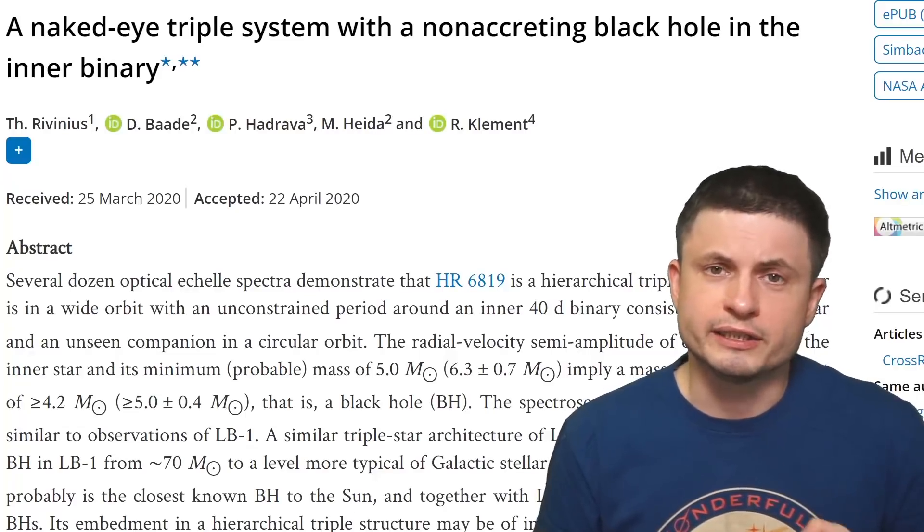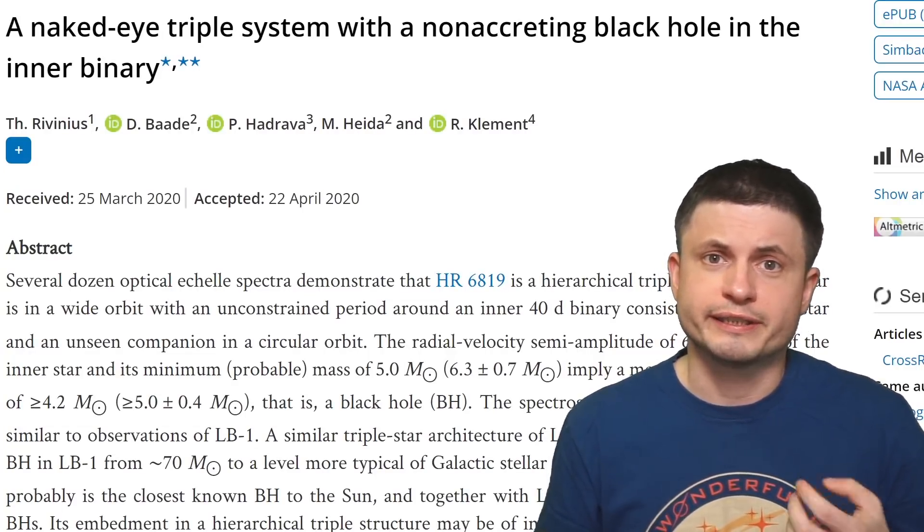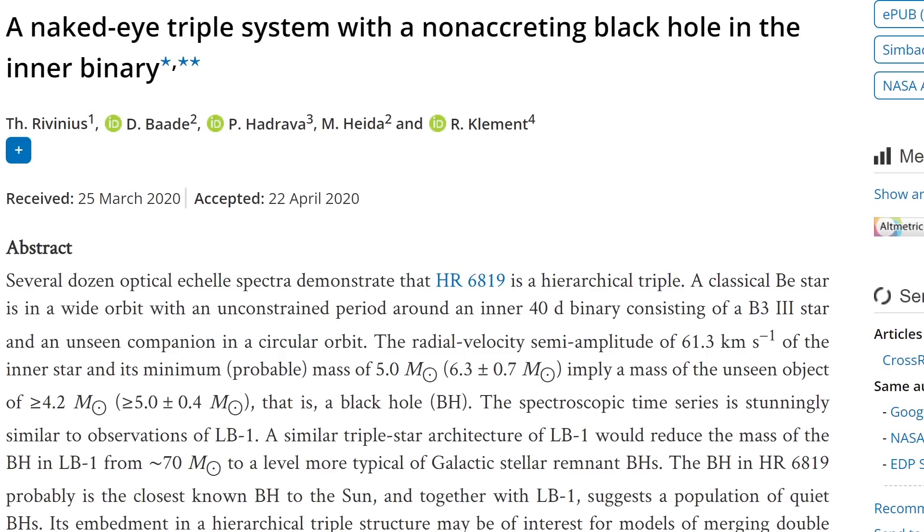Hello, wonderful person, this is Anton, and in this video we're not talking about a discovery per se. We're talking about a clarification of a discovery from a couple of years ago, when scientists thought they discovered the closest black hole to planet Earth, located in a system visible with the naked eye known as HR 6819, the original study for which you can find in the description below.